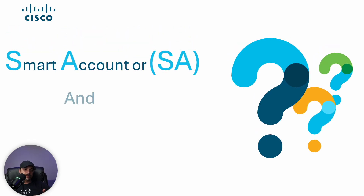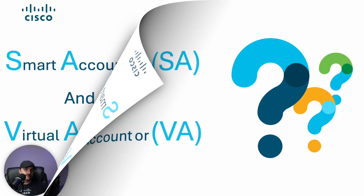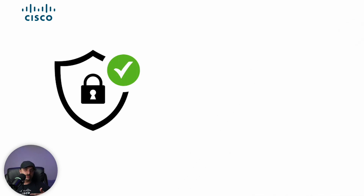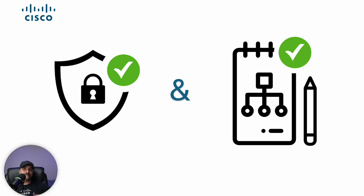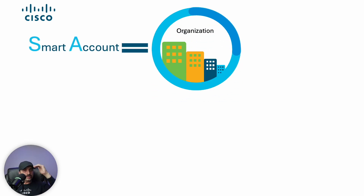First, let's see what a smart account, or SA, and virtual account, or VA, are. At Cisco, we use a smart account and virtual account to provide secure and organized access to our various applications and resources. Think of a smart account as representing your entire organization — it's the top-level structure that allows you to manage access and permissions for all users in your organization, as well as any third parties who need access to Cisco applications and resources provided to your company. Within a smart account, there are four key roles.